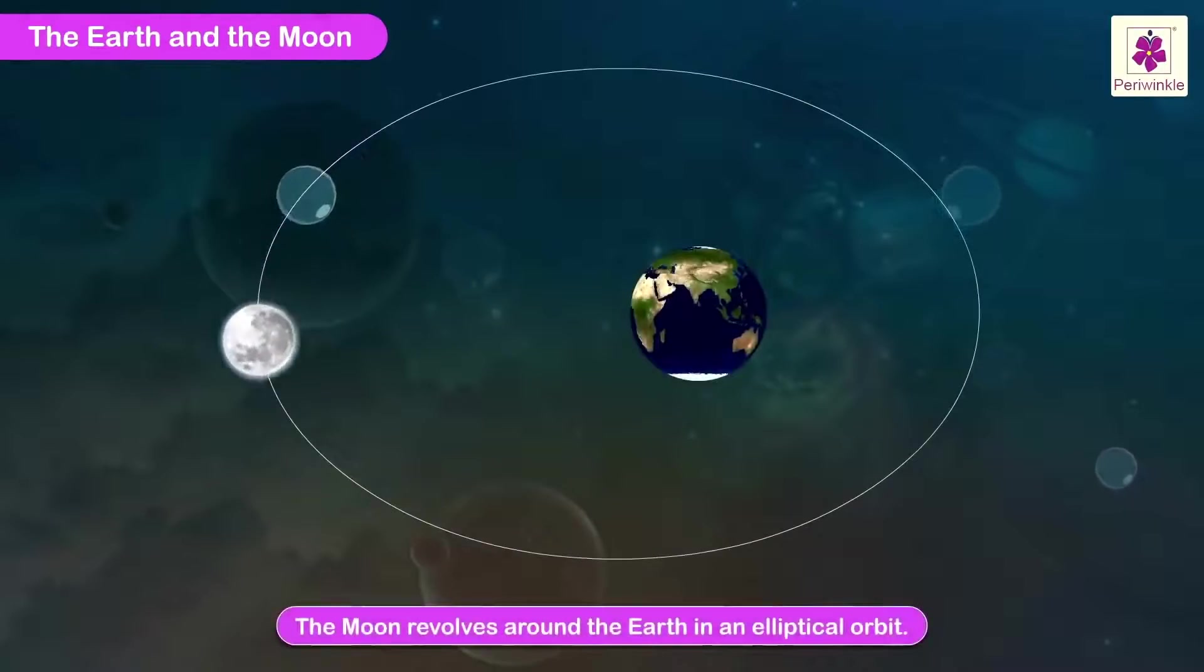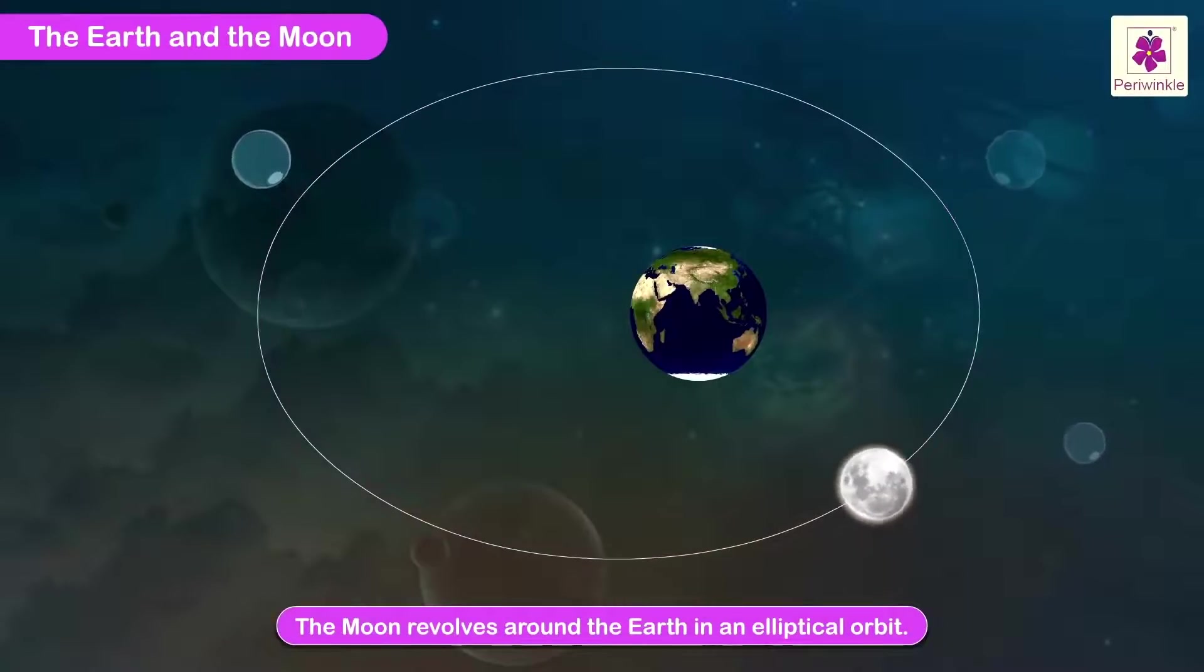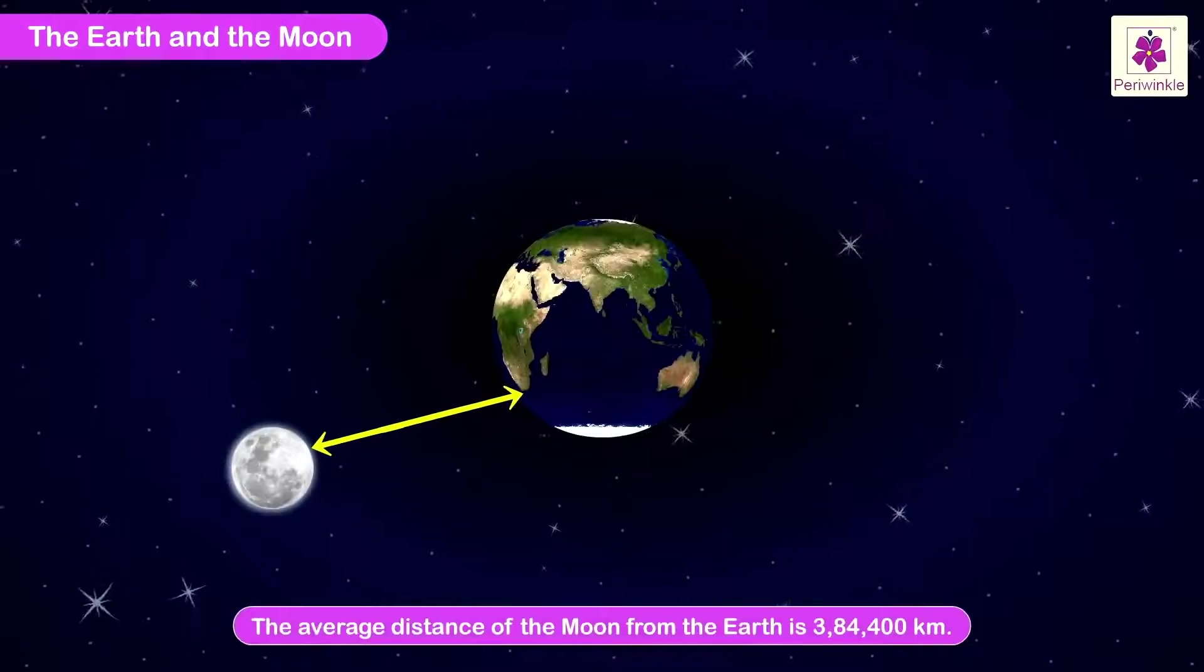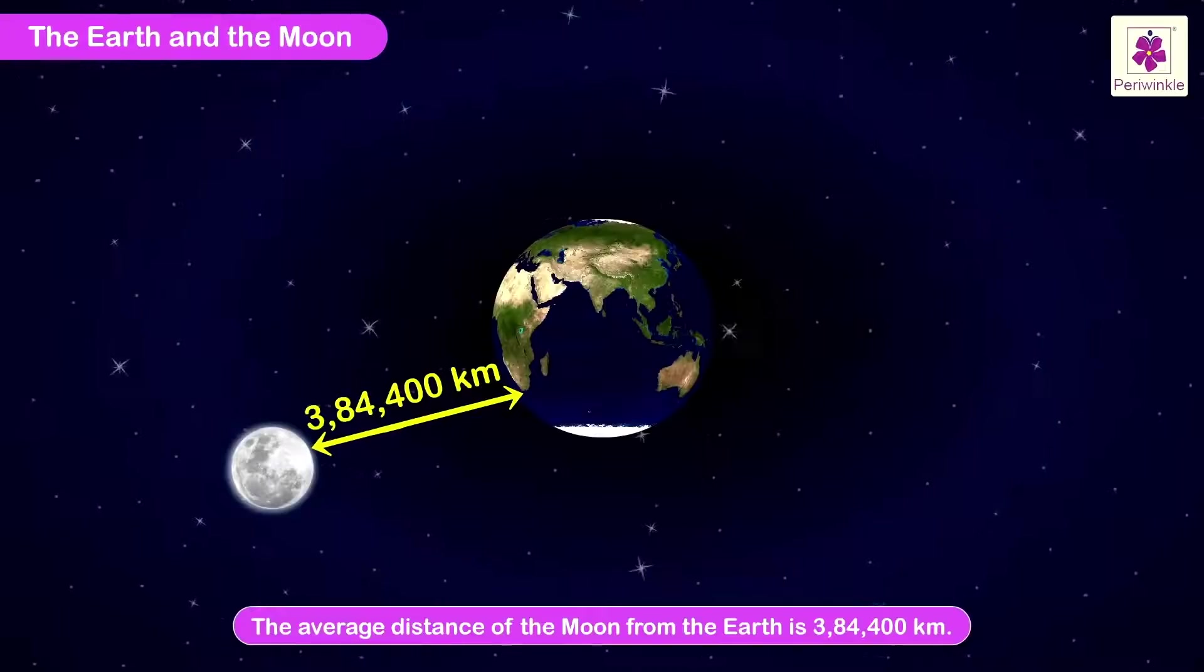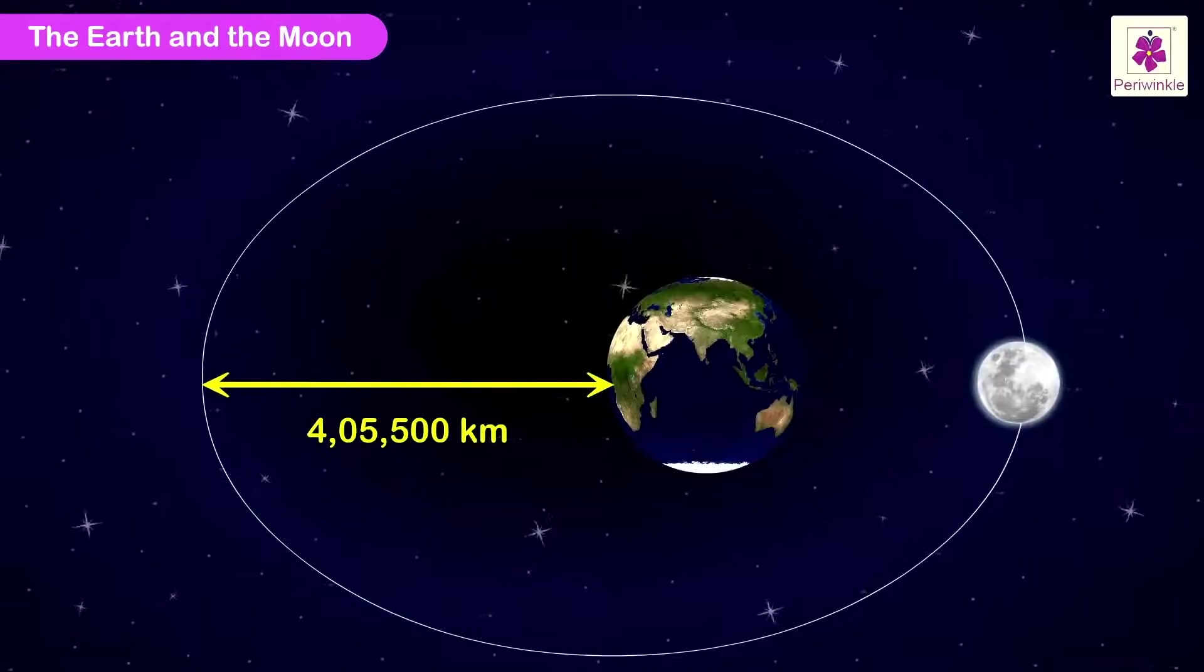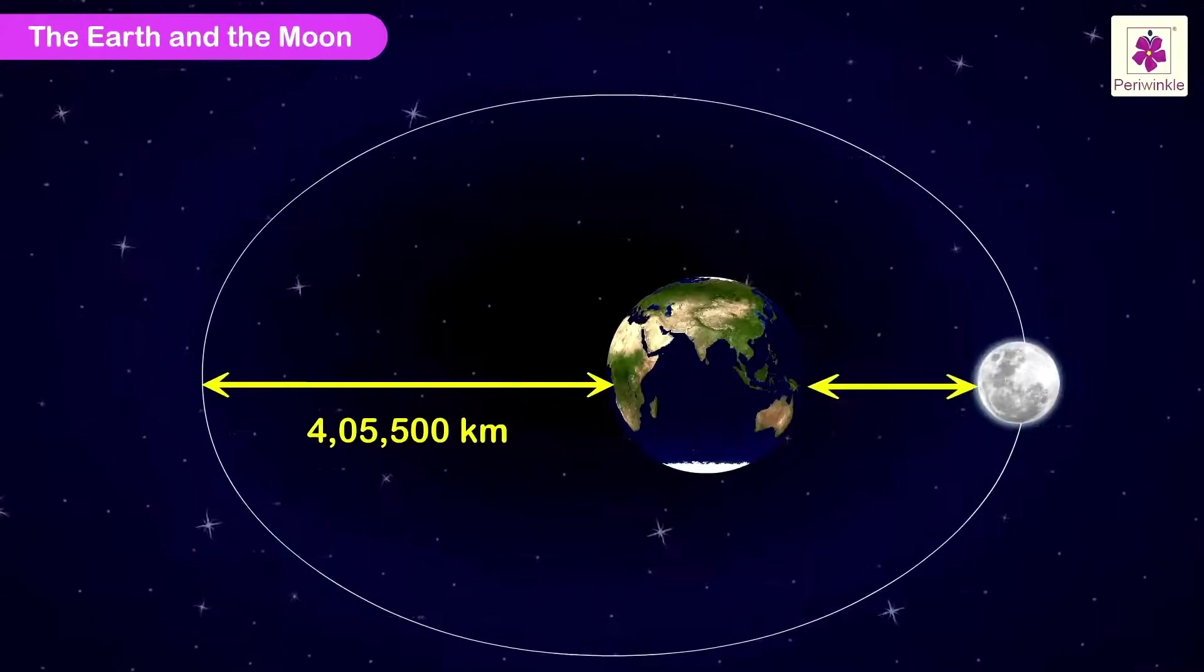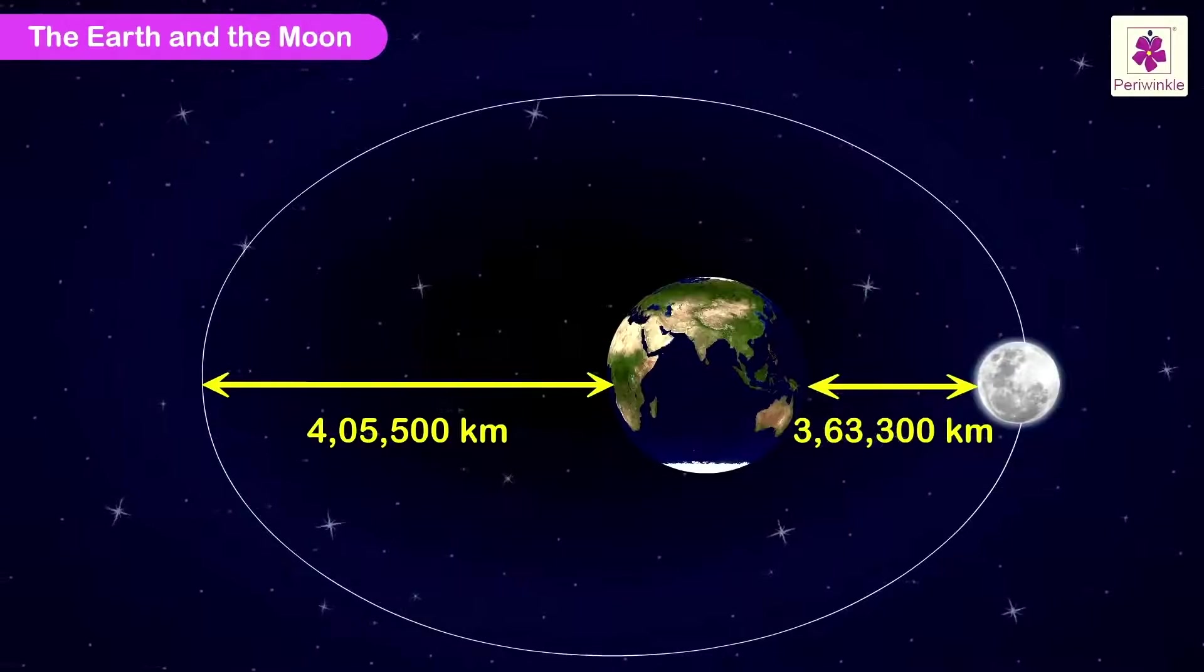The Moon revolves around the Earth in an elliptical orbit. The average distance of the Moon from the Earth is 384,400 kilometers. The farthest distance is 405,500 kilometers and the closest distance is 363,300 kilometers.